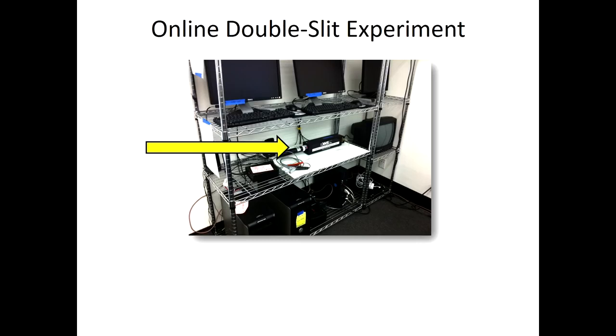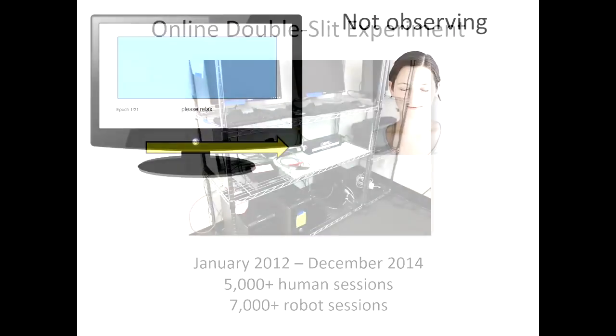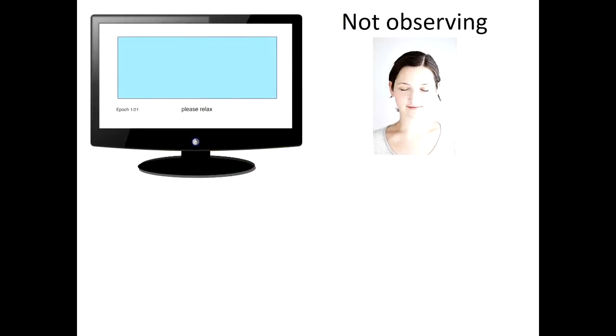So there's the double slip. This is sitting on a rack that has a bunch of servers on it. And we ran this for three solid years, calendar years 2012, 13, and 14. Ended up with over 5,000 sessions done by human observers and 7,000 done by robot observers. And I'll explain what that means in a minute.